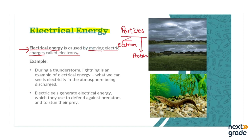An example of electrical energy is lightning during a thunderstorm. Lightning — the bijli that flashes during heavy rain — is an example of electrical energy. When there is a very stormy rainfall, you can see lightning happening in the sky. That is because of electrical energy. It is electricity in the atmosphere being discharged in the form of lightning.